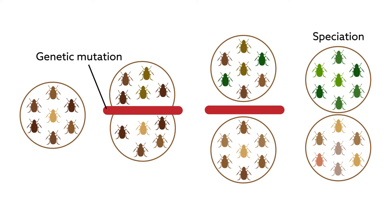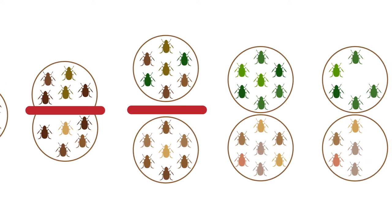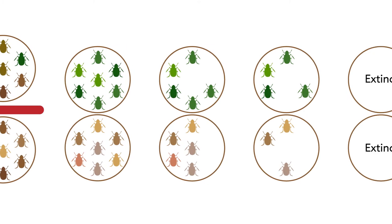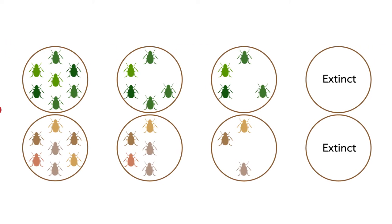This process is called speciation, but no species can maintain its numbers forever. Over geological timescales, decreases in populations seal a species' fate, and they eventually become extinct.